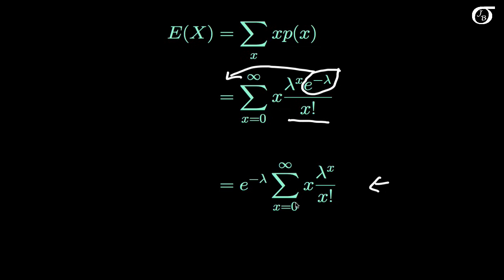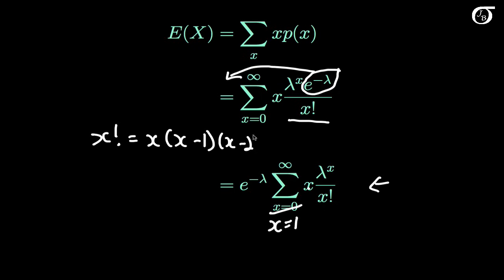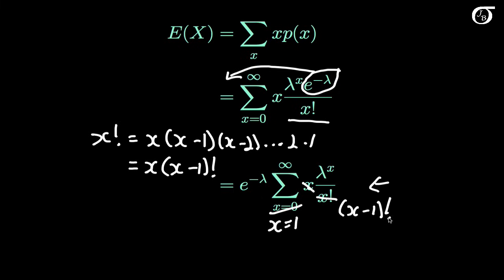First note that when x is equal to 0, this whole term is 0, so we can change the lower limit of summation to x equals 1. We'd like to cancel out this x with part of the x factorial in the denominator. Recall that x factorial is x times x minus 1 times x minus 2, all the way down to 2 times 1, which can also be written as x times x minus 1 factorial. So we can cancel this x with the first term.